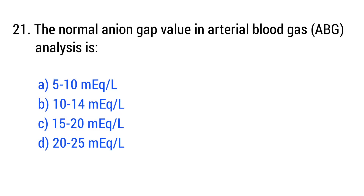Question No. 21. The normal anion gap value in arterial blood gas analysis is? The right answer is option B: 10 to 14 milliequivalents per liter.